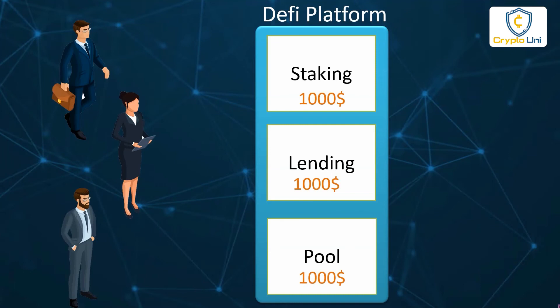David deposits $1,000 worth of coins in a money pool to provide trading liquidity for swapping to earn trading commissions. If we combine those amounts from staking, lending, and pool, the total amount is $3,000. If that DeFi platform is only performing this type of operation, then total value locked is $3,000.